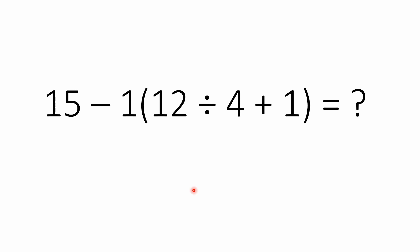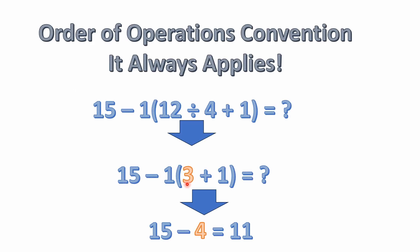Some people are getting confused over the idea of implicit and explicit multiplication, and some people are just trying to solve this left to right and ignoring the order of operations. I want to clarify that the order of operations convention always applies — it's not just for algebra. This applies in any equation.